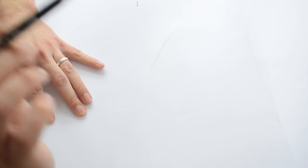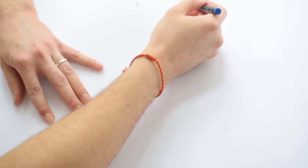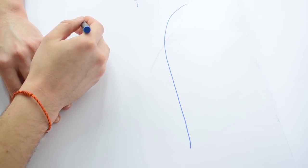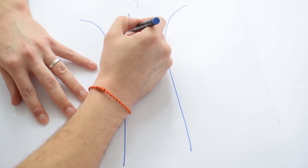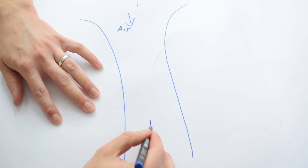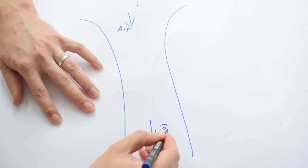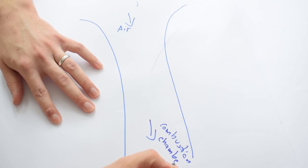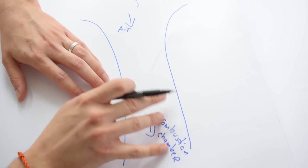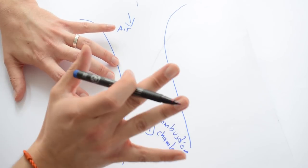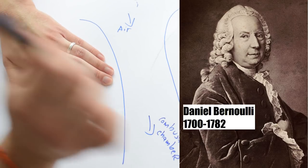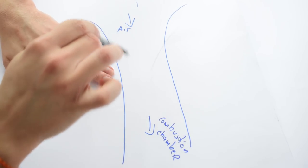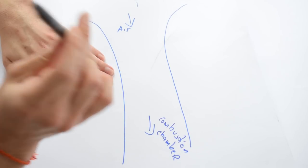Now every carburettor is essentially a tube. We have air coming from this side and here we have the combustion chamber. Now to work, the carburettor relies on something called the Bernoulli principle, and the Bernoulli principle states that when a fluid increases in speed it will decrease in pressure.